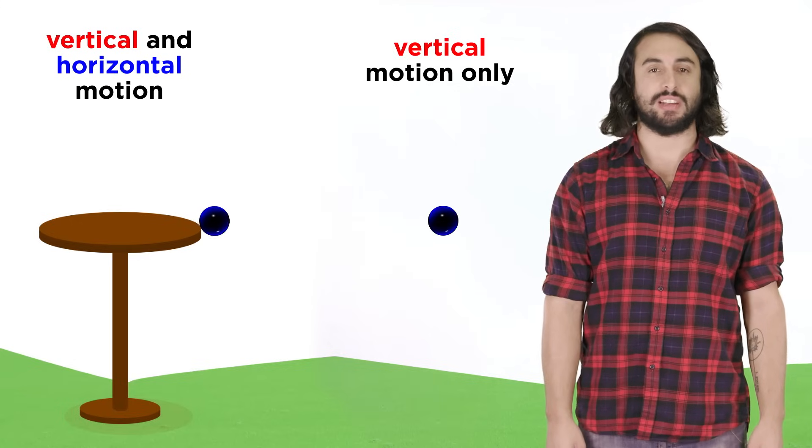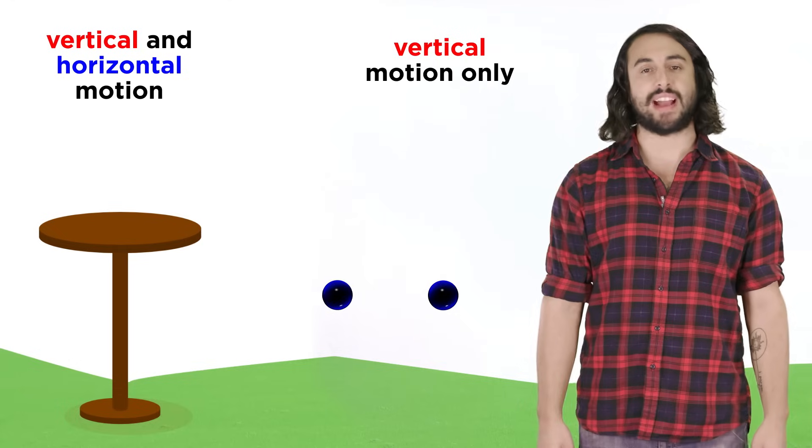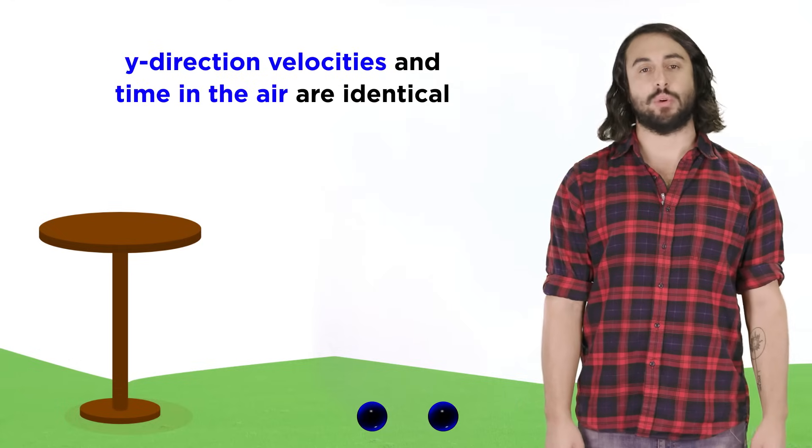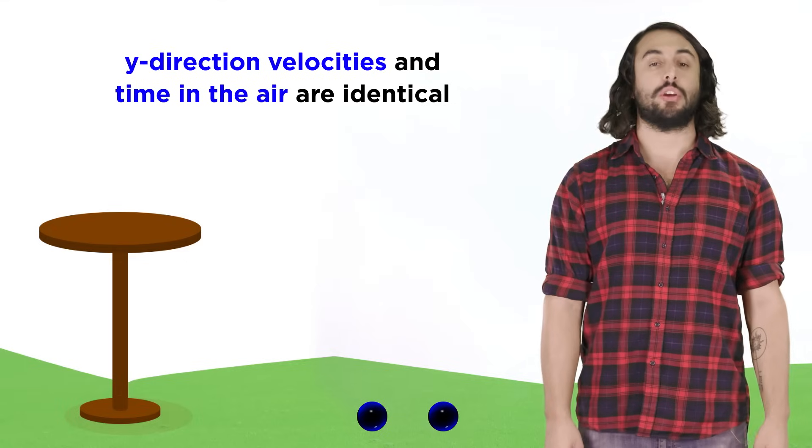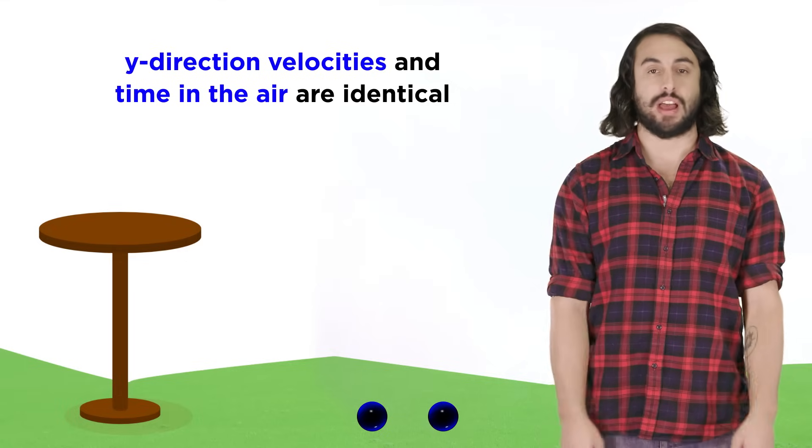The one with horizontal velocity will cover some distance in the x-direction, but it will fall downwards at the same rate as the one that falls straight down, and so they will have identical air times.